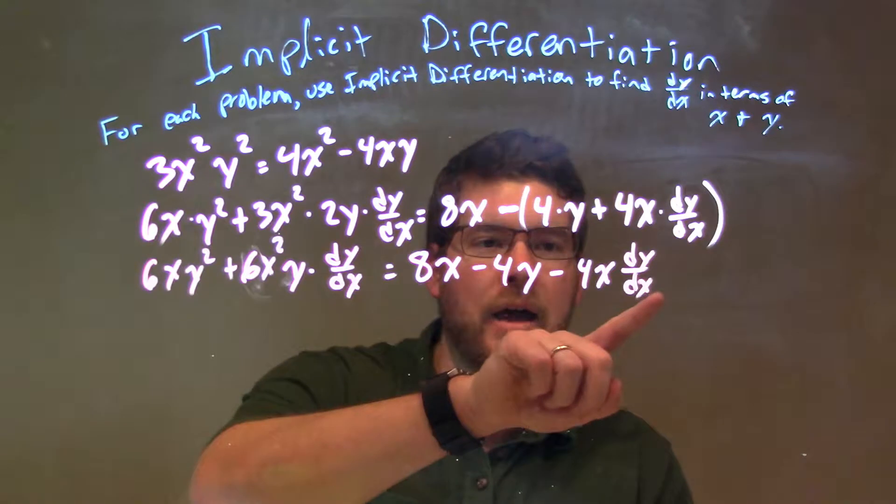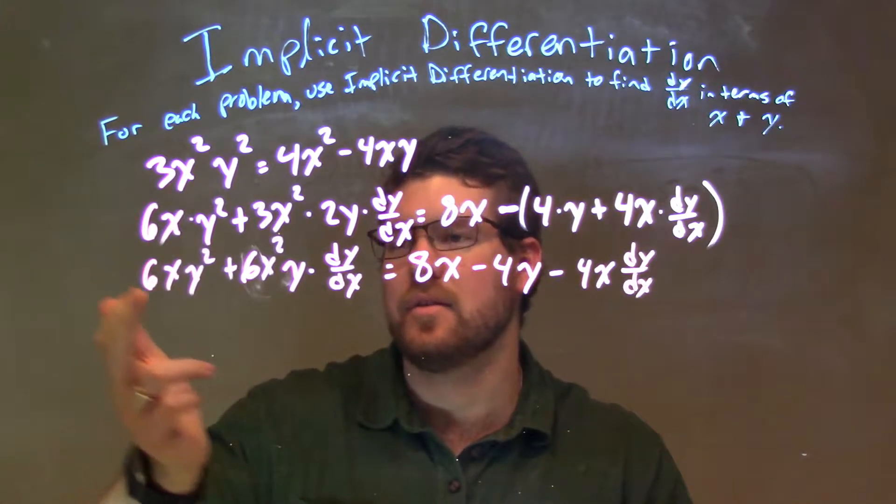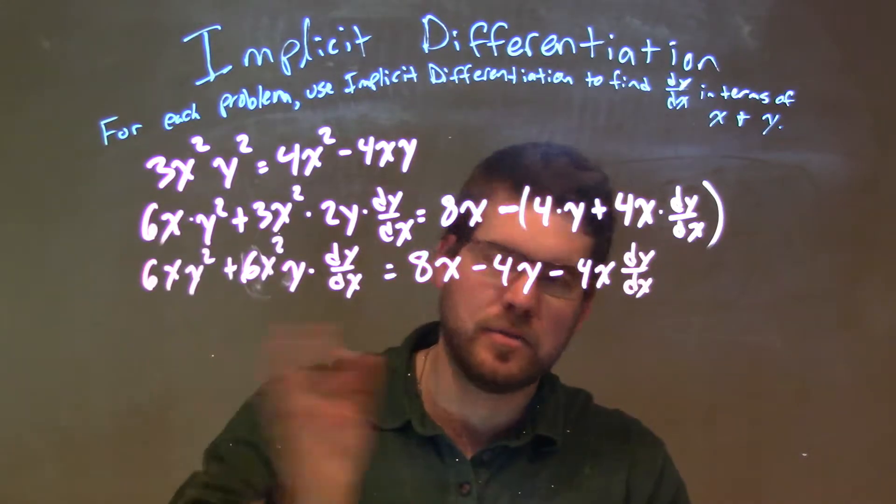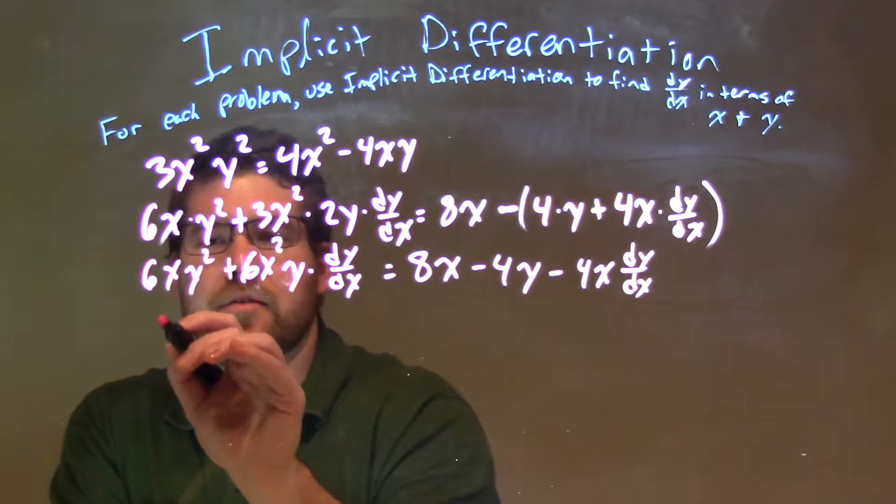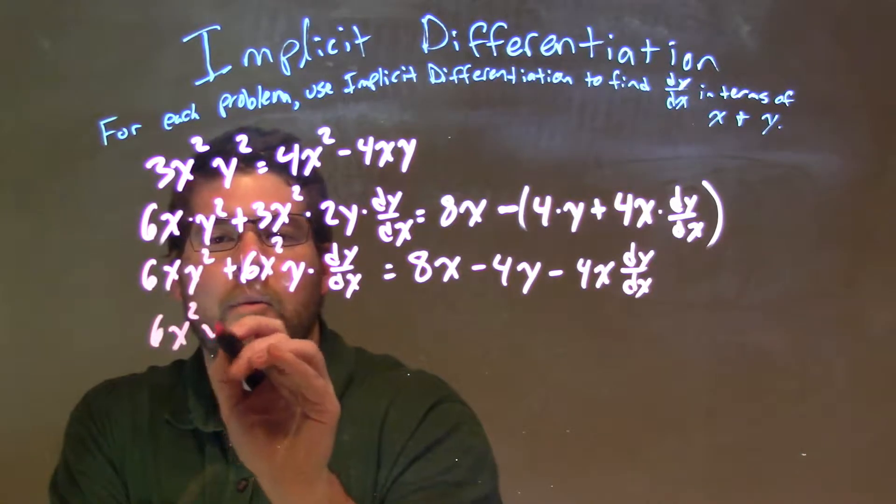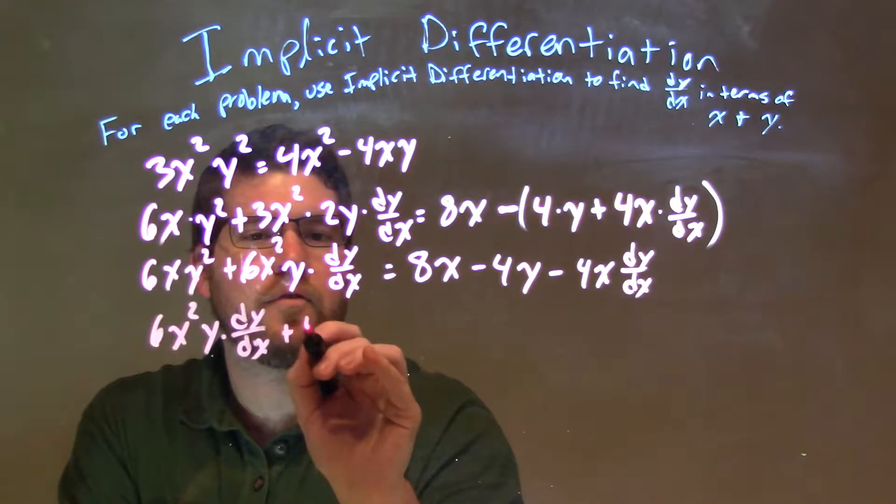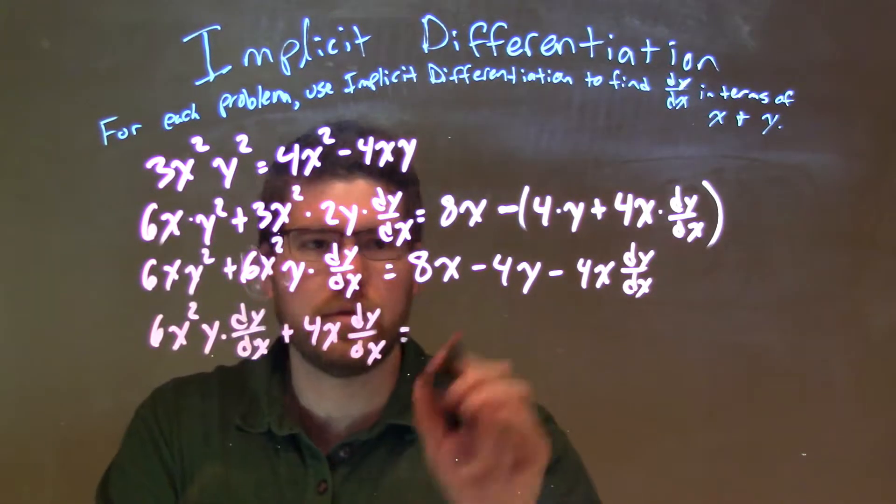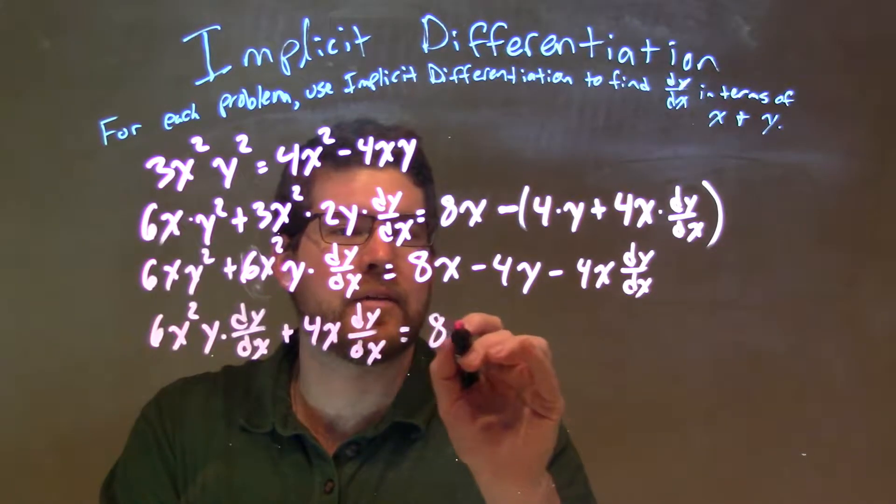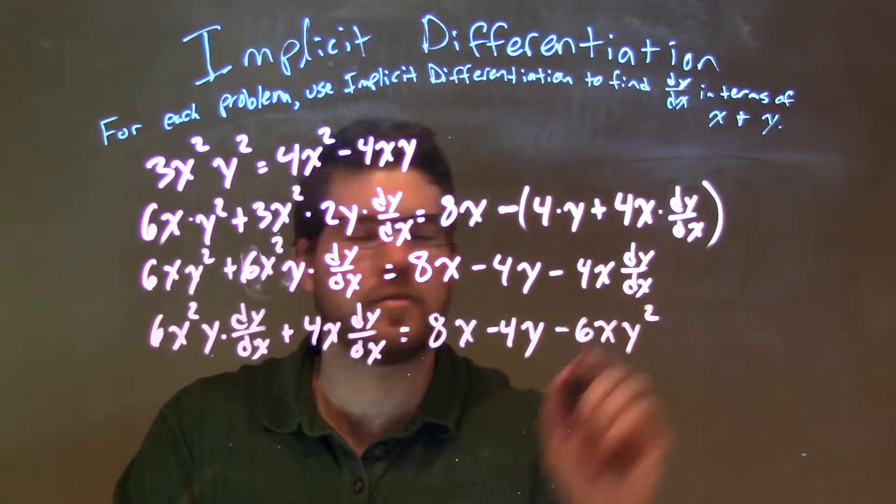So like I said, let's add 4x dy/dx to the right-hand side, and let's subtract the 6xy² from the left-hand side to the right-hand side. So we have 6x²y dy/dx plus 4x dy/dx equals, now we have here, 8x minus 4y minus 6xy².